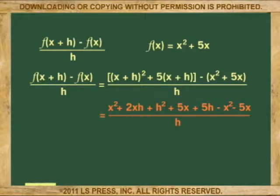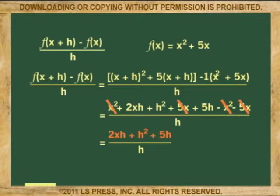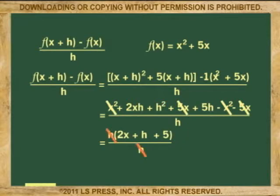Once the substitution is made, we distribute. We square the binomial and it becomes x squared plus 2xh plus h squared. We now distribute the 5 over xh: 5x plus 5h. We now multiply negative 1 by x squared plus 5x, giving us negative x squared minus 5x, all of it over h. Combining, the x squared and 5x cancel, leaving behind 2xh plus h squared plus 5h. Factoring the h, we cancel the h in the denominator with the just-factored h. And the difference quotient is 2x plus h plus 5.